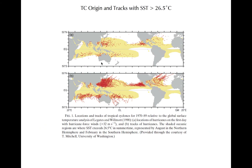This figure is similar to the last, but it only shows genesis points and tracks for TCs in the 1970s and 80s. The yellow shaded region represents the climatological contour of 26.5 degrees C SST during the same period. While most tropical cyclones formed over the warm SSTs, a few did not, particularly over the North Atlantic.